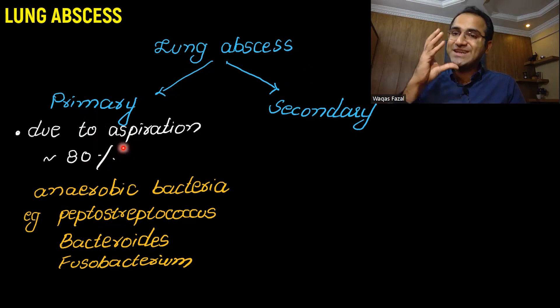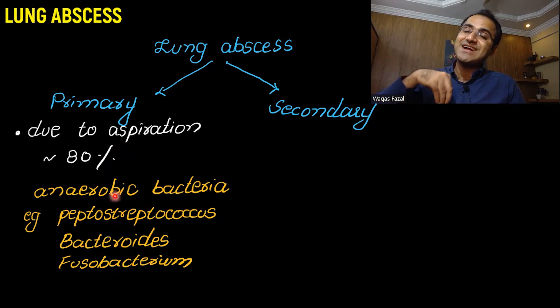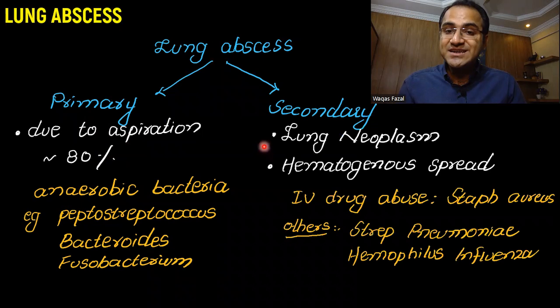Remember, the oropharyngeal bacteria involved are mostly anaerobic bacteria — Peptostreptococcus, Bacteroides, Fusobacterium. These anaerobic bacteria get inside the lungs during aspiration and cause lung abscess formation.